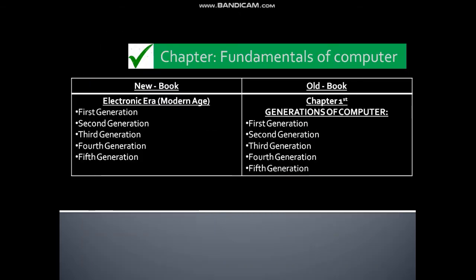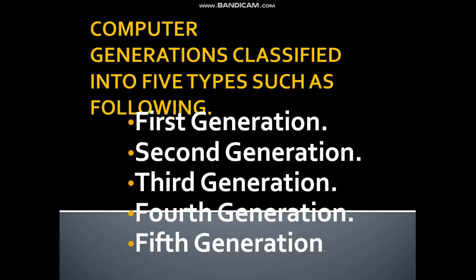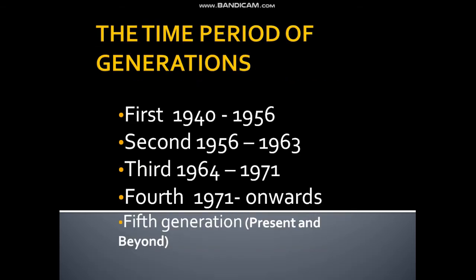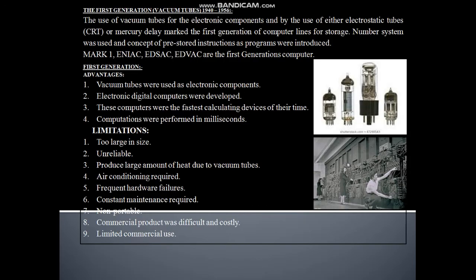The generation of computers covers the electronic era and the modern age. There are five different generations: first, second, third, fourth, and fifth generation. These are the years of each generation. First generation.